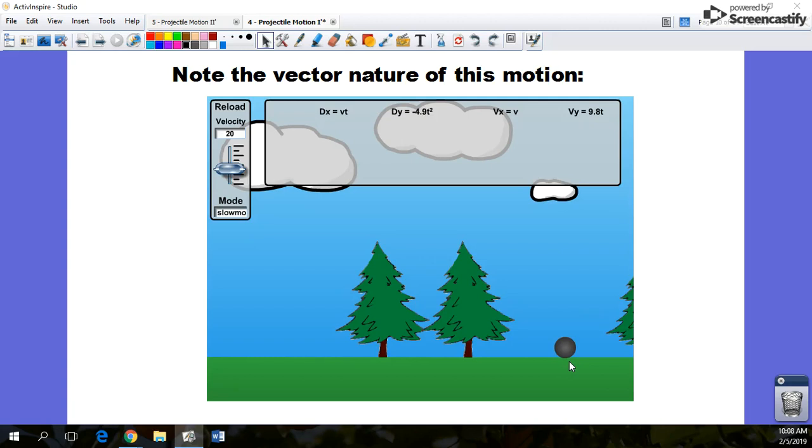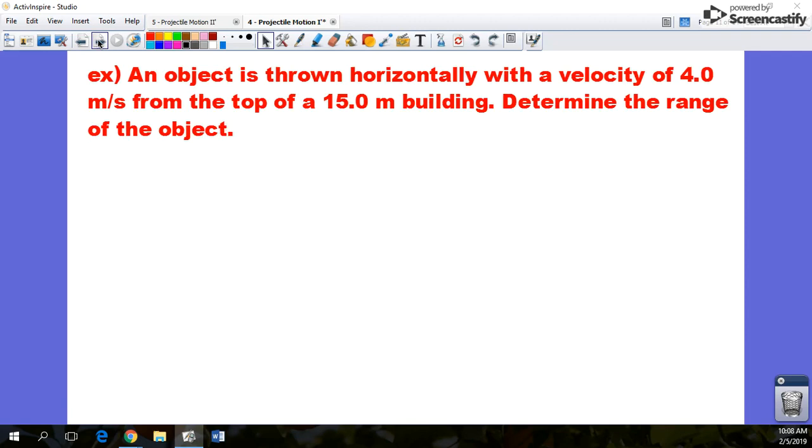But in the x direction, there's uniform motion. The object doesn't speed up. It doesn't slow down. We're going to keep that in mind as we solve this problem.